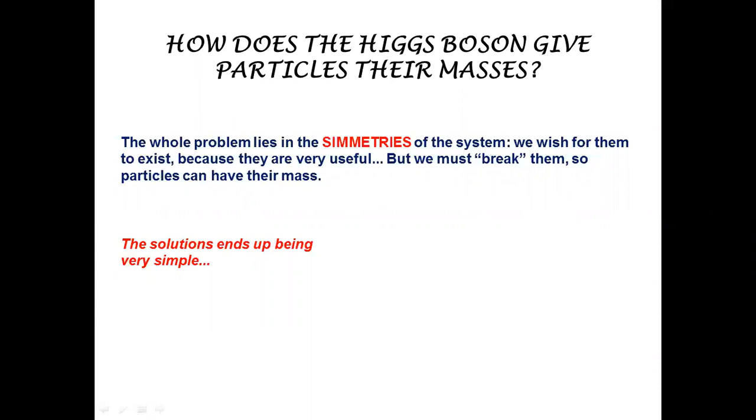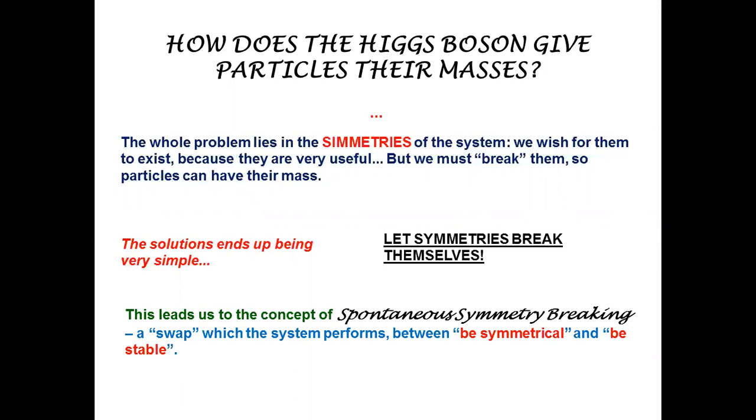How does the Higgs boson give particles their masses? The whole issue is that you need these symmetries to control the interactions and to make sure that the theory is complete, well-behaved and has great predictive power. But as long as these symmetries are intact, then you do not have masses. And so the solution ends up being very simple. You do an exchange. You have the symmetries in the theory, but the theory is unstable, and you let the symmetries break themselves. Spontaneously, the symmetries, the system is such that dynamically, spontaneously, the symmetries break themselves.